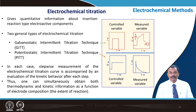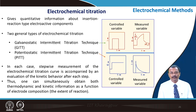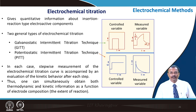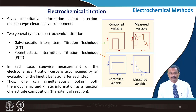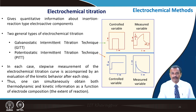Electrochemical titration is an important tool that gives quantitative information about insertion-reaction-type electroactive components. There are two general types: galvanostatic intermittent titration technique (GITT) and potentiostatic intermittent titration technique (PITT). In each case, a stepwise measurement of the electrochemical titration curve is accompanied by an evaluation of kinetic behavior after each step, allowing one to obtain both thermodynamic and kinetic information as a function of electrode composition — determining the extent of the reaction.